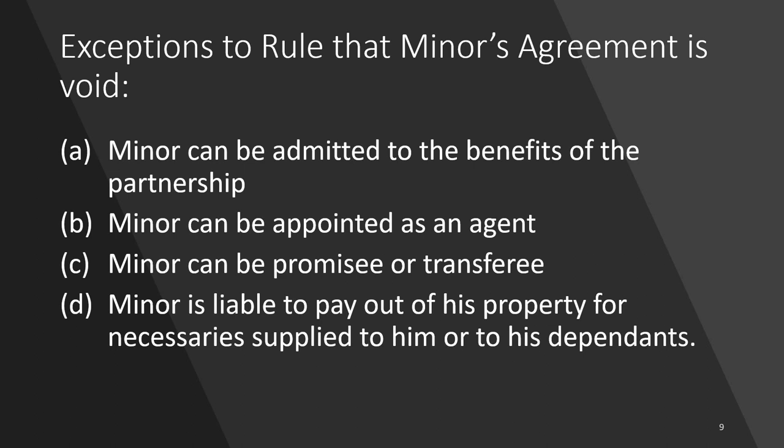There are certain exceptions to a minor's agreement where a minor can be part of a contract and the agreement is not void. First exception: a minor can be admitted to the benefits of a partnership. You can take a minor as a member of your partnership firm, but only to the benefits — meaning only to the profits, not for the losses. This is provided under the Indian Partnership Act.